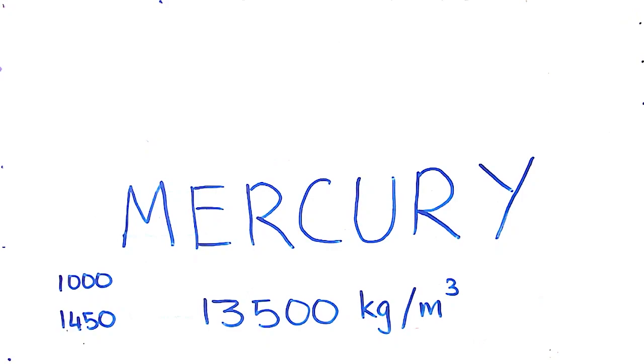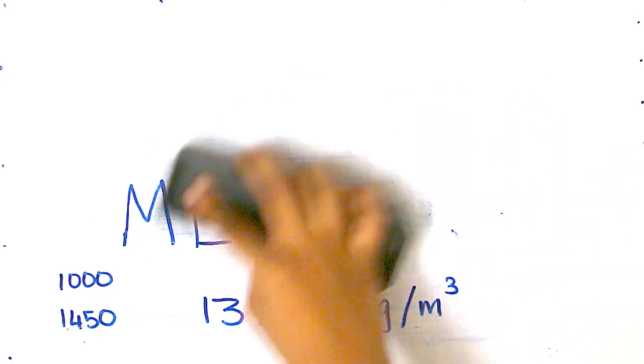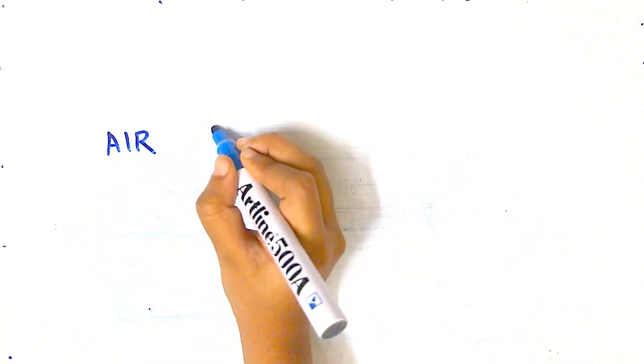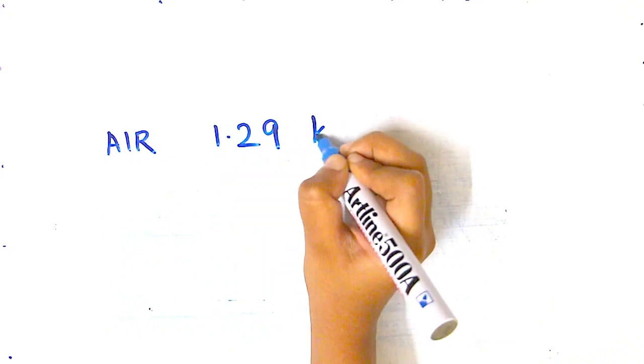Gases can have their density specified too, and the same mass per unit volume concept applies. But the density for gases are smaller numbers. One meter cube of gas, any gas, is obviously not going to weigh 1000 kilograms like water does. Air, for example, the atmospheric air that we have all around us, it has a density of 1.29 kilograms per meter cube.